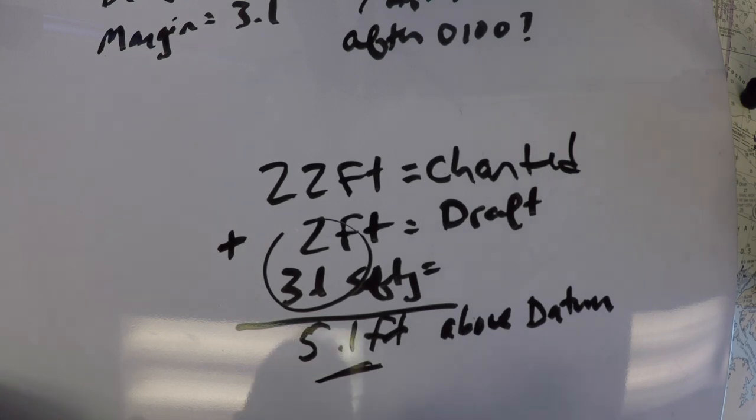So the problem is really saying, what time will the tide be at least 5.1 feet? Okay? So if we reframe the question in that sense, we can approach it like a normal tide problem.